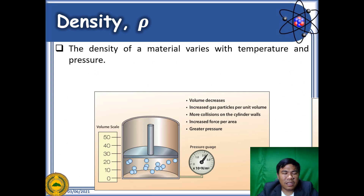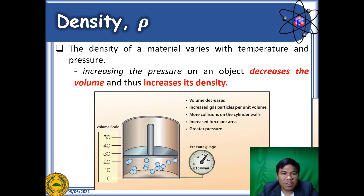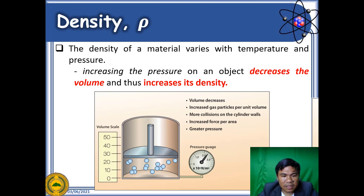So when does density change? Density changes when the temperature and the pressure of the system change. Increasing the pressure on an object decreases the volume and thus increases its density. If you look inside the piston, since the volume decreases and the collisions of particles inside the volume increase, that creates enough pressure and density increases.